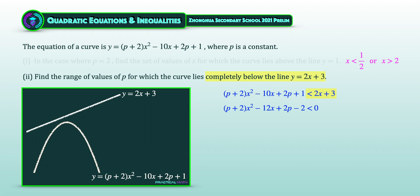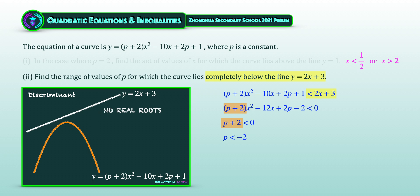From the sketch, we can tell that it is a maximum curve, which means that the coefficient of x², which is p + 2, must be less than 0. Solving this linear inequality gives p < −2. Next, let's discuss discriminants. Since the curve does not intersect the line, there are no real roots.